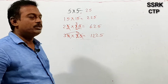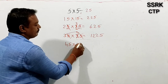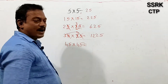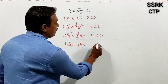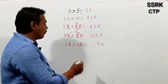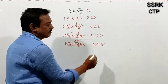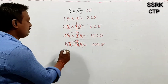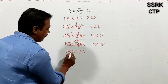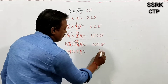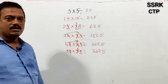Next, 45×45. So 5×5 is 25. Then 4 after the number is 5, so 4×5 is 20. Result is 2025. For 55×55: first 5×5 is 25. Then 5 after the number is 6, so 6×5 is 30. Result is 3025.